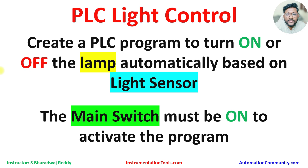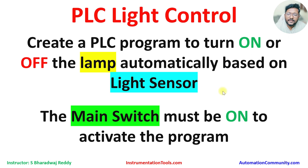We also have one main switch. This switch must be in the ON state, then only our program will activate and run. Otherwise, the PLC will not turn on the lamp. This is a very simple and basic example. First, identify the inputs and outputs. The main switch is a digital input, the light sensor is an analog input, and the lamp is our digital output.